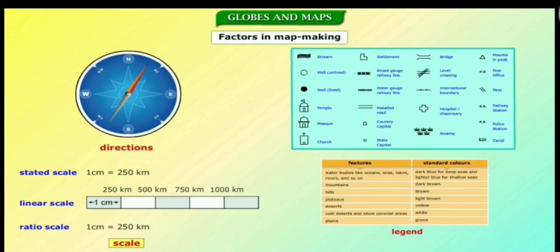Maps are normally drawn to scale. There are three ways to write a scale. They are stated scale, linear scale and ratio scale.